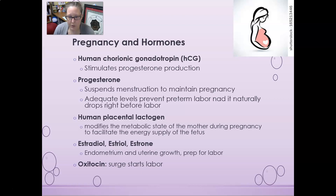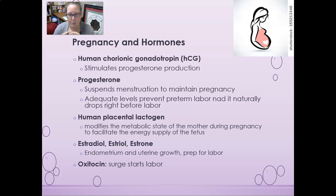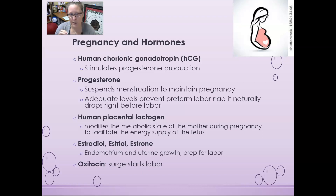Estradiol, estriol, and estrone are three different forms of estrogen present during pregnancy. Their job is to maintain the endometrium — the uterine lining — and support uterine growth as the baby grows. Their levels going down can also be part of the preparation for labor. Of the three, estriol is especially specific to pregnancy.